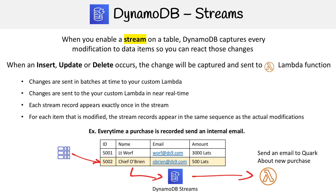So I'm updating Chief O'Brien — this could be an insert, and it gets inserted in the database. But now we're going to react to that insert and send that data to the DynamoDB stream. And that DynamoDB stream is configured to send it to a lambda.